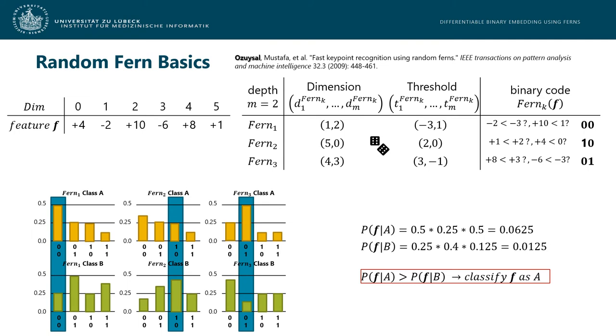In a semi-naive Bayesian manner, the probabilities of seeing these encodings given one of the two classes based on the trained feature histograms are multiplied with each other and in this case class A would have the higher probability and would thus be assigned.